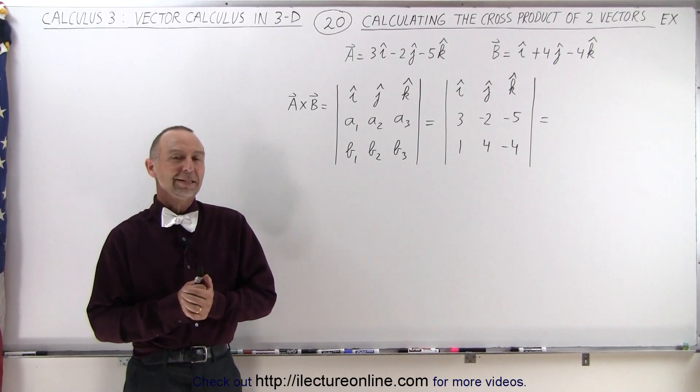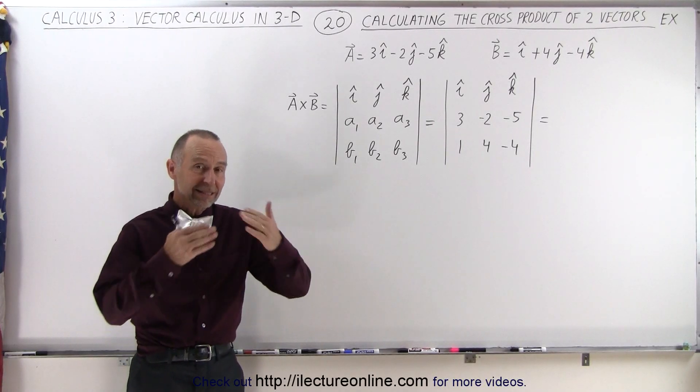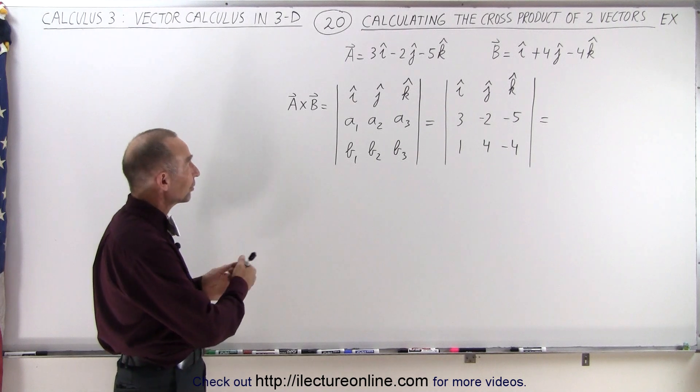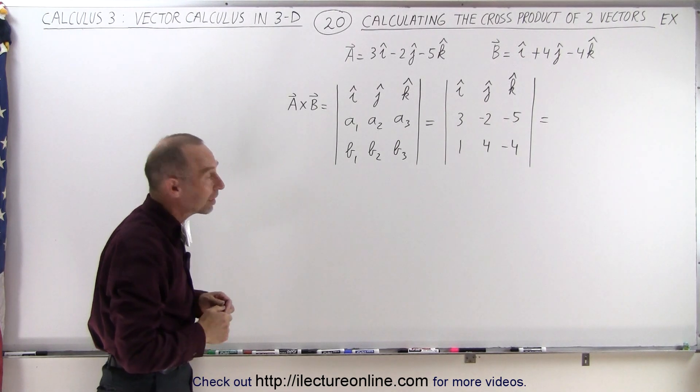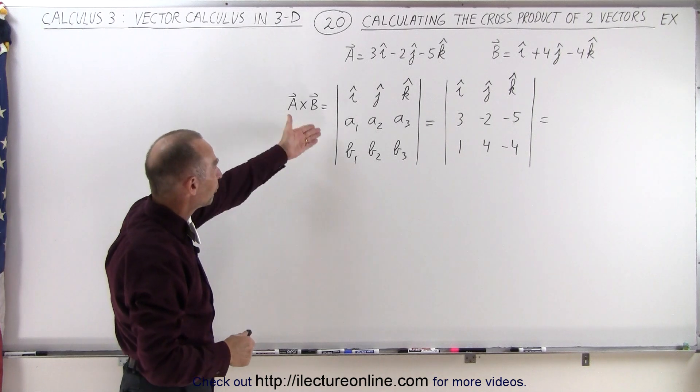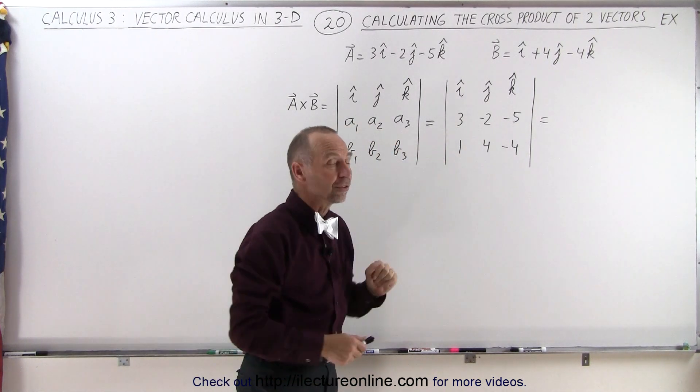Welcome to our lecture online and now let's actually calculate the cross product of two real vectors. We have A and B defined in terms of their X, Y, and Z components. So the general format of a cross product now turns into something like this.